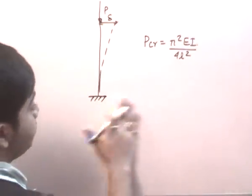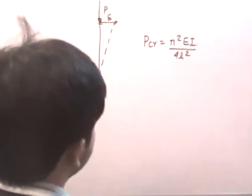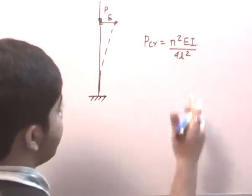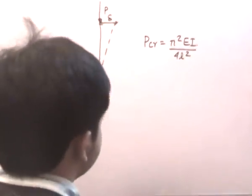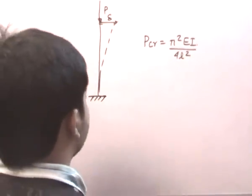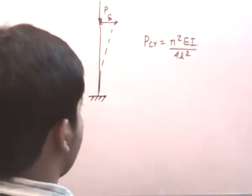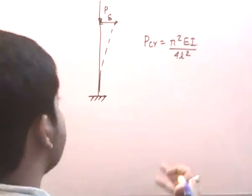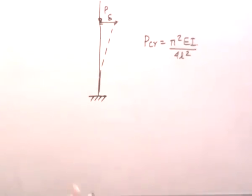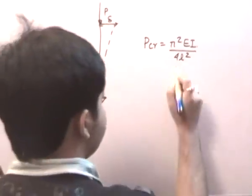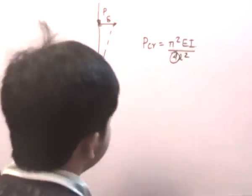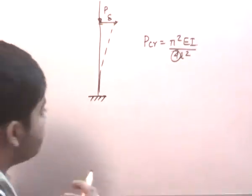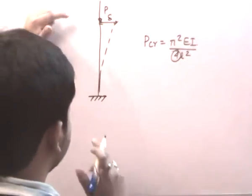From this equation, one can see that PCR is a function of flexural rigidity and length. If the length is greater — a long column — the critical load will be lesser. If the value of flexural rigidity is higher, the critical load will have a higher value. The factor 4 essentially depends on the fixity or rigidity of the end restraints.